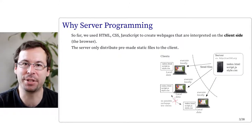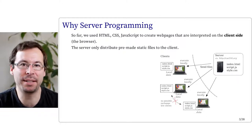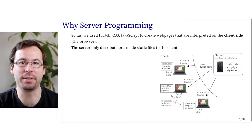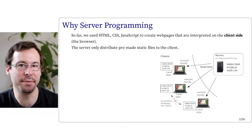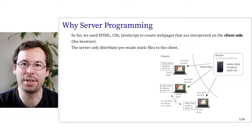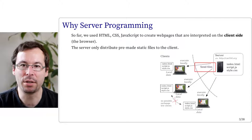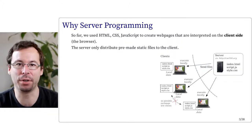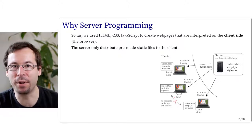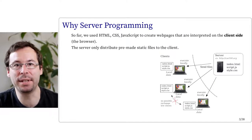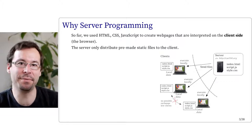Until now we have used HTML, CSS, and JavaScript to create web pages. These languages are interpreted on the client side — in other words, on the browser of your machine when you look at the web page. Some of you have uploaded your web page on the CSE 104 host, and when you access it by typing the URL, the server is mostly doing only one thing: it sends the pre-made static files to your browser. Every time a client connects to this address, it receives its own copy of these files, and it's the client that executes them.